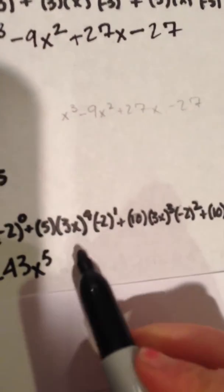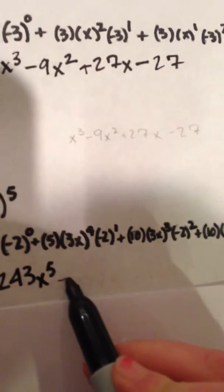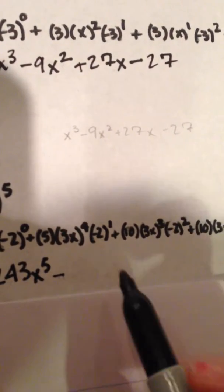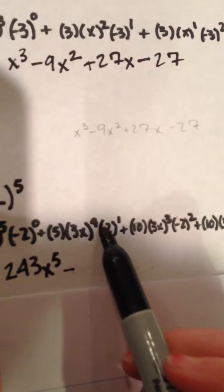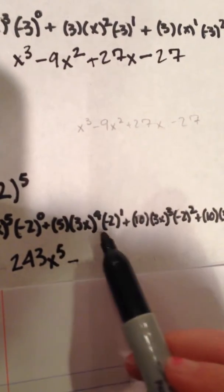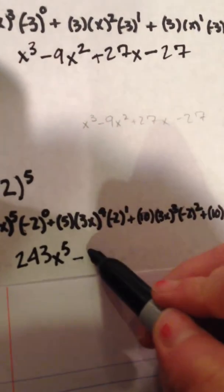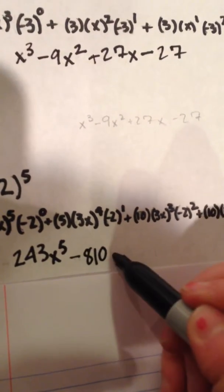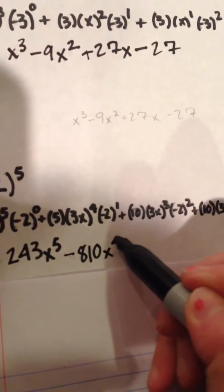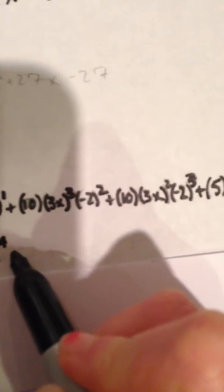Our next term will be negative. And it is 3x to the fourth power times five times negative two, which becomes 810x to the fourth power.